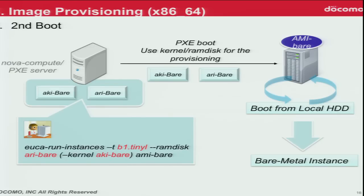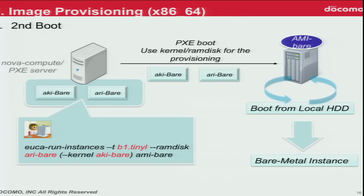For the second boot, you can use your own kernel and RAM disk specified through euca or Nova commands. During the second boot, the kernel and RAM disk are downloaded. Once downloaded to the bare-metal machine, it boots from the local disk, and the bare-metal machine becomes a bare-metal instance.